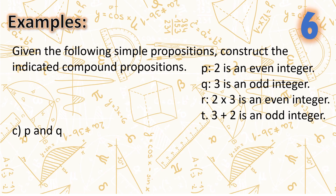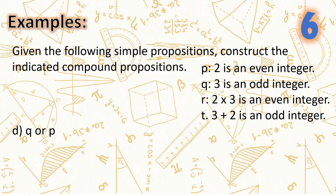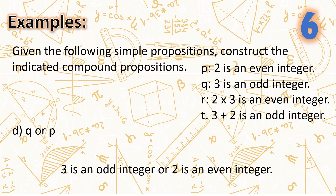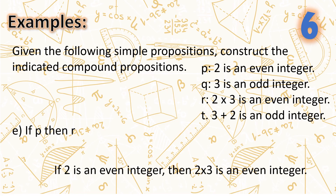Letter C: P and Q — we say '2 is an even integer and 3 is an odd integer.' Letter D: Q or P — we say '3 is an odd integer or 2 is an even integer.' Letter E: if P, then R — we say 'if 2 is an even integer, then 2 times 3 is an even integer.'